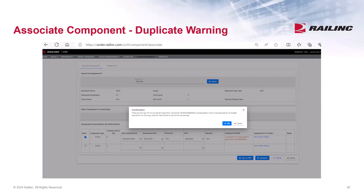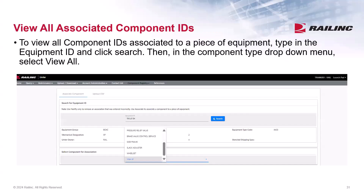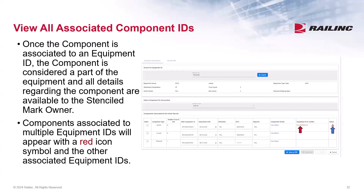We will cover how to resolve this type of conflict shortly. To view all component IDs associated to a piece of equipment, type in the Equipment ID and click Search. Then, in the Component drop-down menu, select View All. Here you can see what components have been associated to the equipment you searched. Once the component is associated to an Equipment ID, the component is considered a part of the equipment, and all details regarding the component are available to the stenciled mark owner. Components associated to multiple Equipment IDs will appear with the red icon symbol, along with the other Equipment IDs.